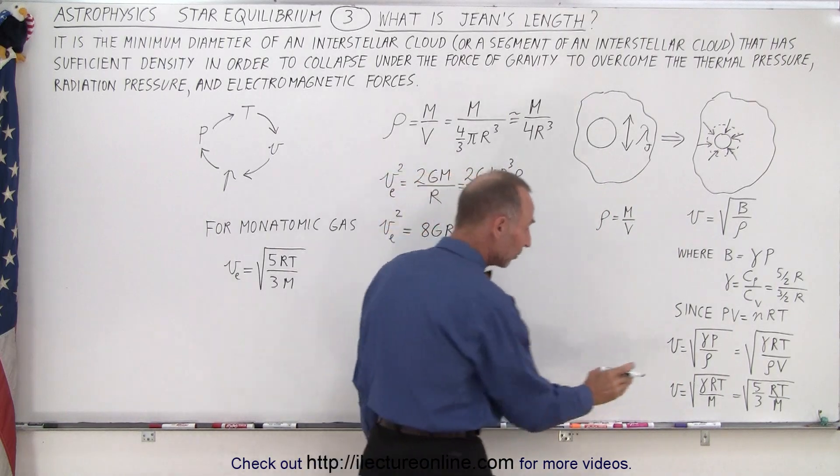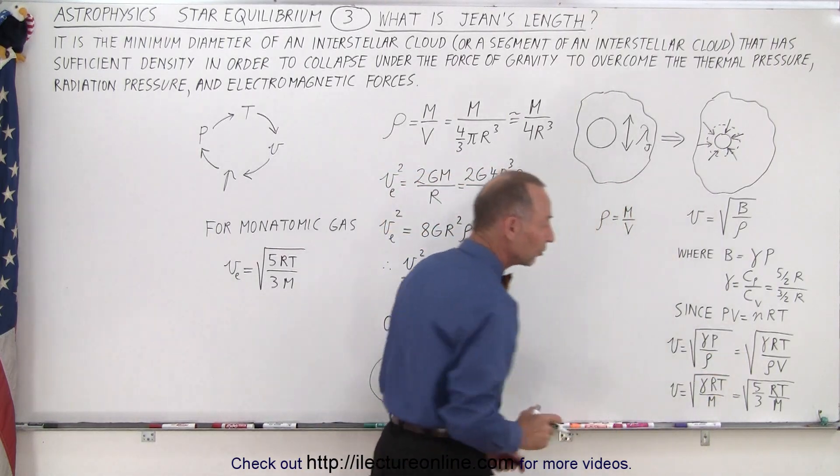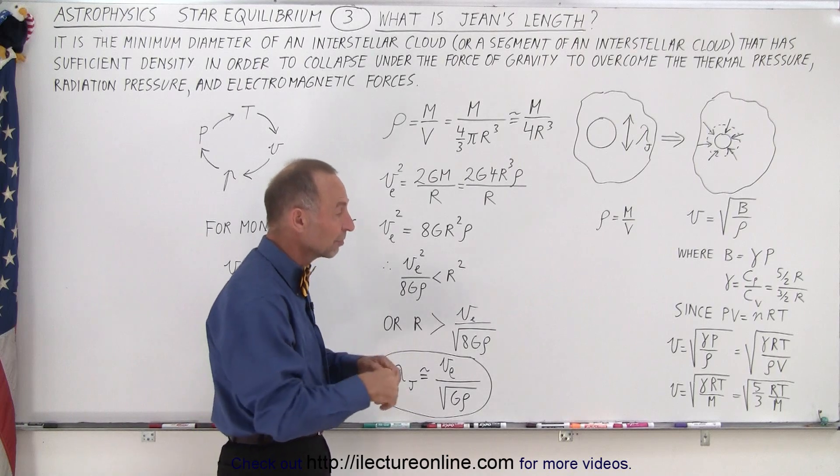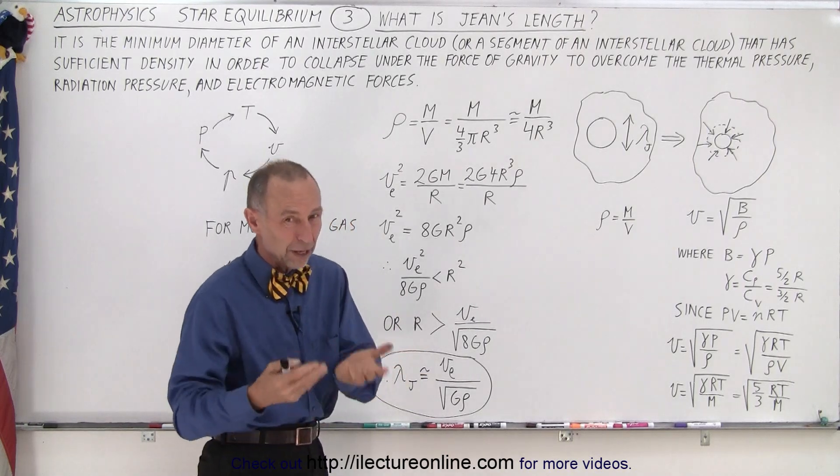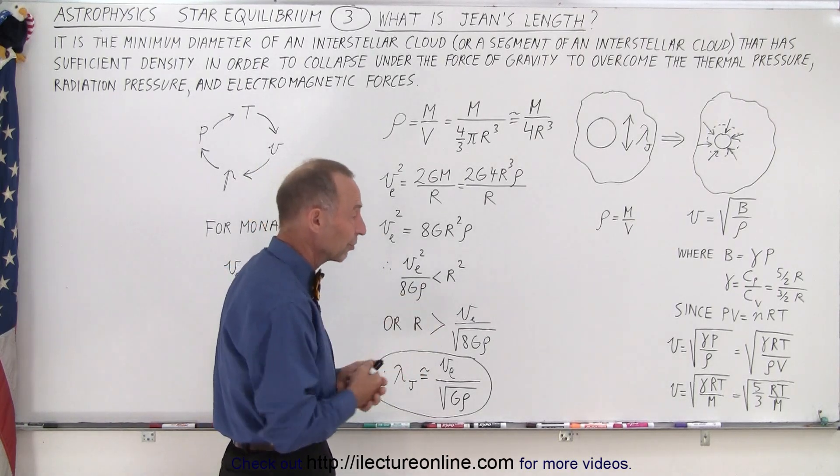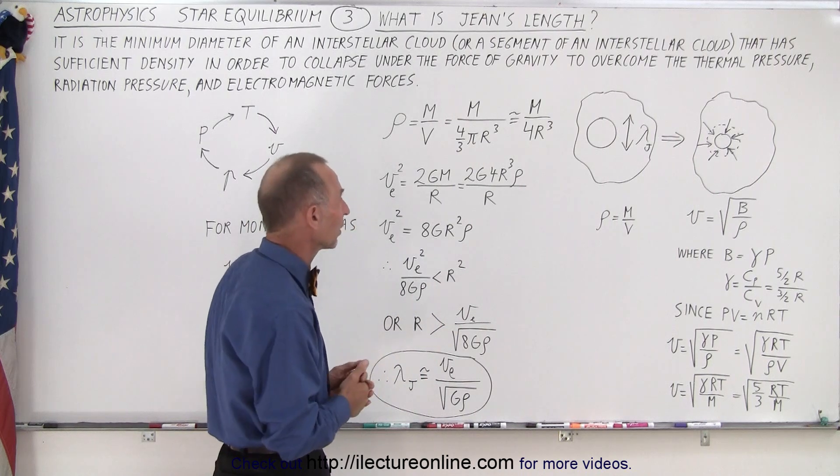So now we have the velocity of the molecules in a gas under that specific temperature, considering it's a monatomic gas, because of course three quarters of the gas there would be hydrogen which is monatomic.